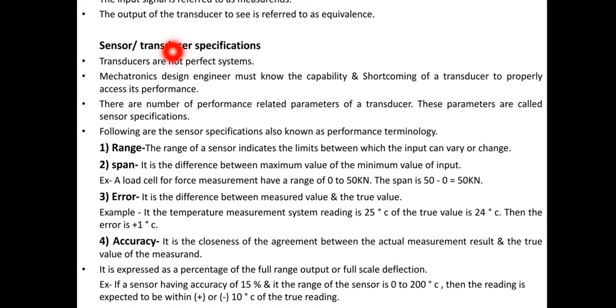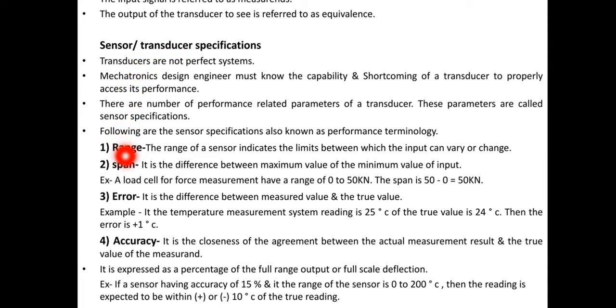Sensor and transducer specifications. Range: the range of a sensor indicates the limits between which the input can vary or change. Span: it is the difference between maximum value and minimum value of the input.